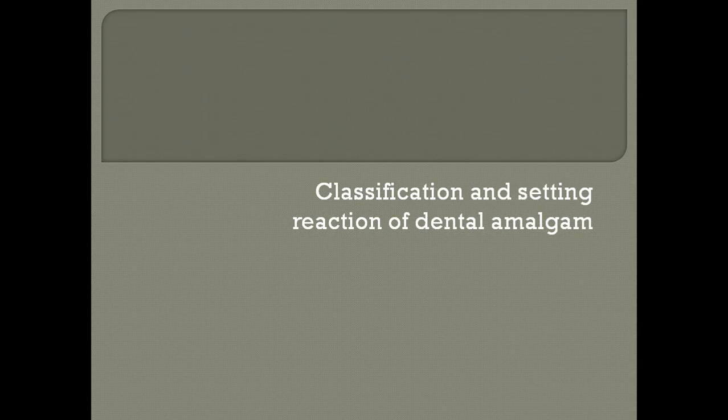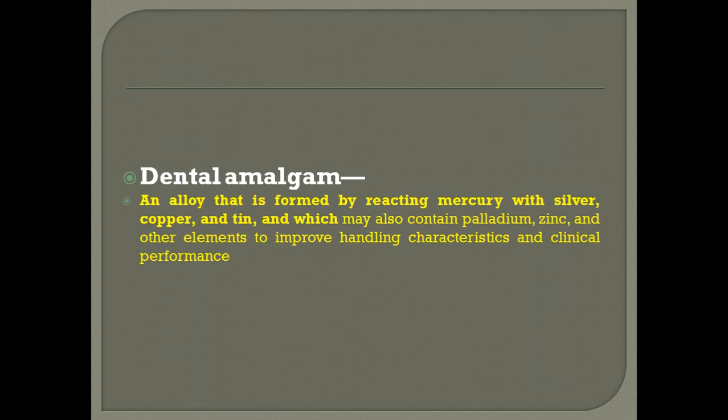Dear students, welcome to today's lecture on classification and setting reaction of dental amalgam. I am Dr. Pawan. Dental amalgam is the alloy that is formed by the reacting of mercury with silver, copper and tin, and which may also contain palladium, zinc and other elements to improve handling characteristics and clinical performance.